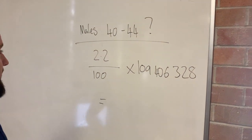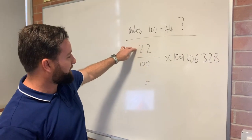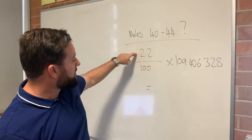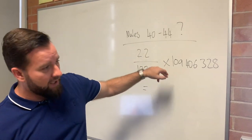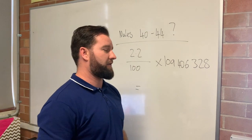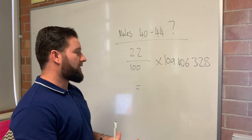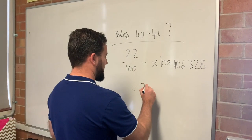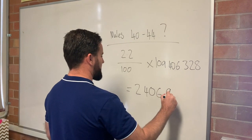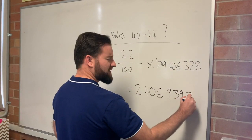Here's how we do the calculation with some arithmetic. How many males are there? We have 2.2% of the population. So we go 2.2 over 100 — because that would be 100% — times the total population of Ethiopia, which is 109,406,328. That gives us 2,406,939.